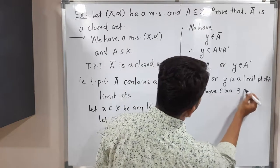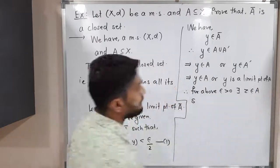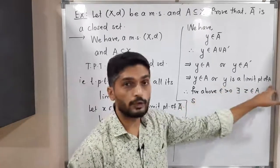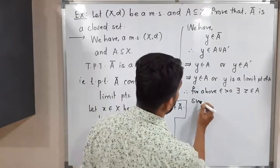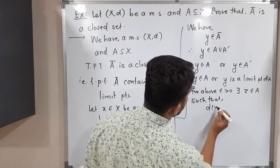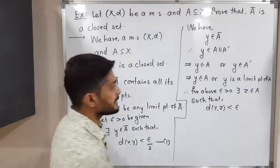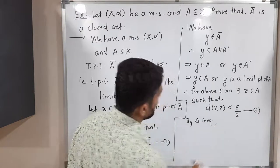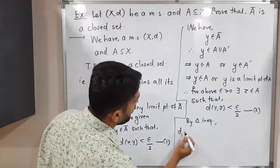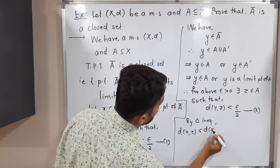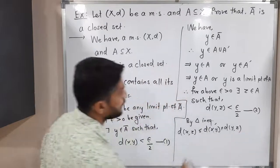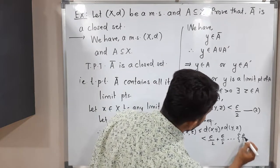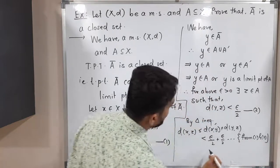For the above epsilon greater than zero, since y is a limit point of A, there exists some z belonging to A such that d(y, z) is less than epsilon/2 — we call this statement (2). Last time we had a limit point of Ā, so we chose y in Ā; but now we have a limit point of A, so we choose z in A.